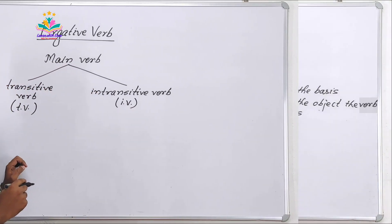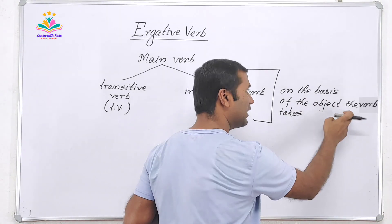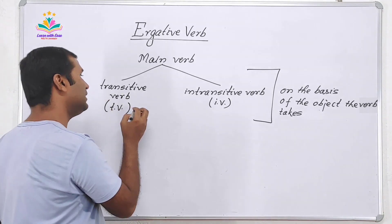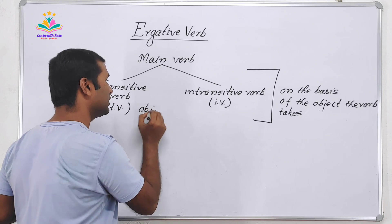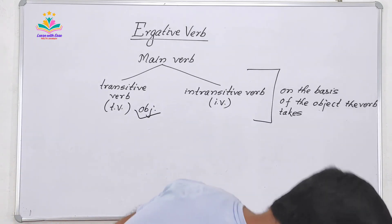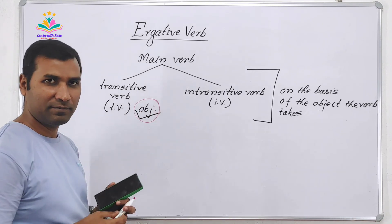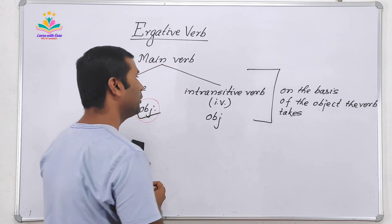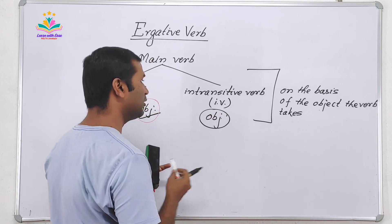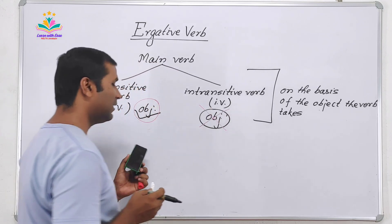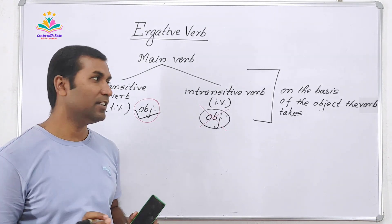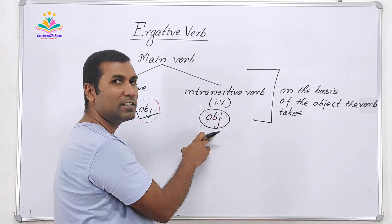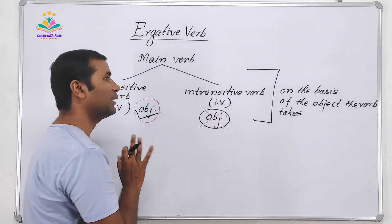Intransitive verbs — on the basis of the object the verb takes. When we say transitive verb, it always takes an object — always. This object is compulsory. But if we use an object with an intransitive verb, that is wrong, because intransitive verb never takes an object. So, main verb either takes an object or does not take an object.